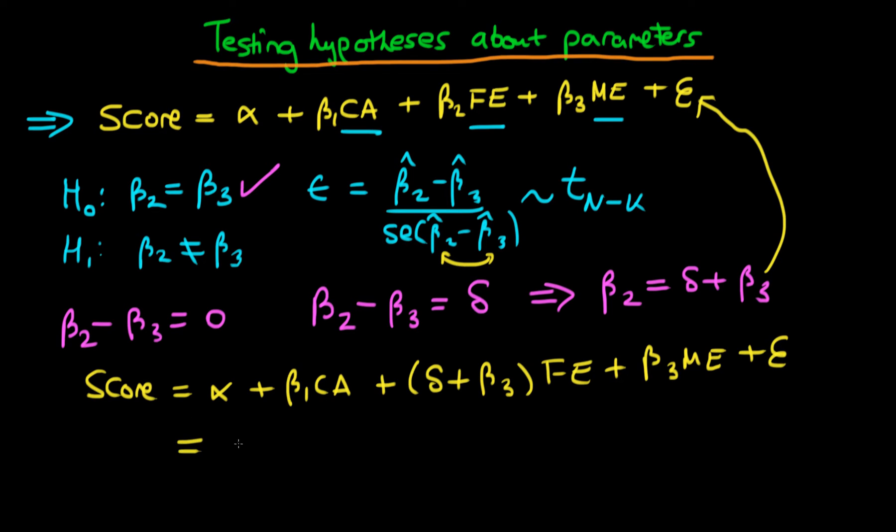Which if we rearrange this, we get score equals alpha plus beta1 times class attendance plus beta3 times father's education plus mother's education plus delta times father's education plus this error term here.